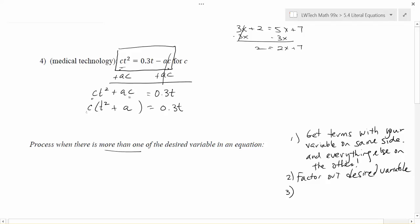Because I pulled the C out as a factor, this C is being multiplied by the T squared plus A group. So our last step is to divide by what is left in parentheses in order to get the variable alone.